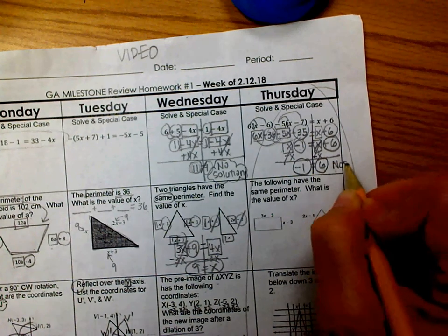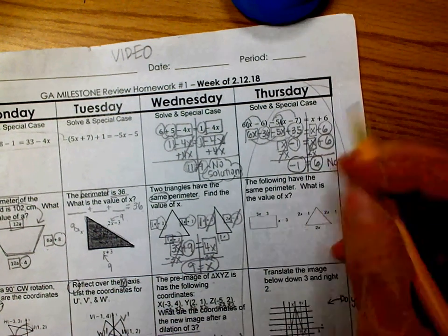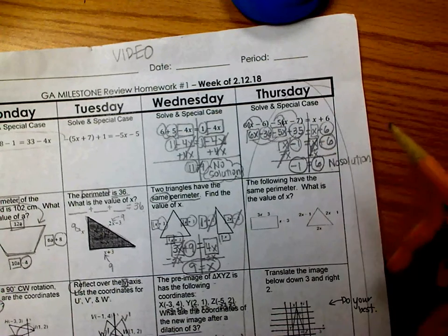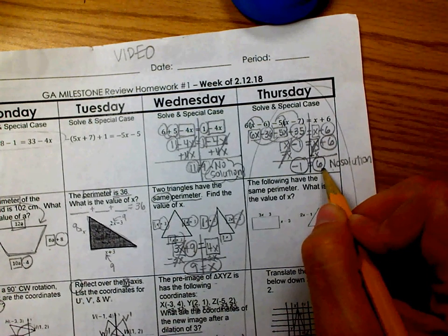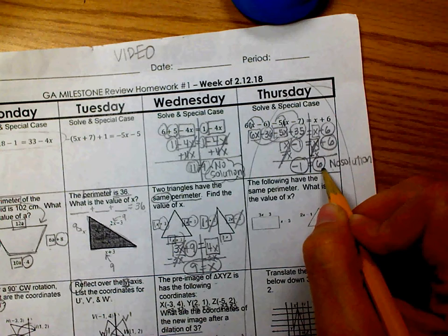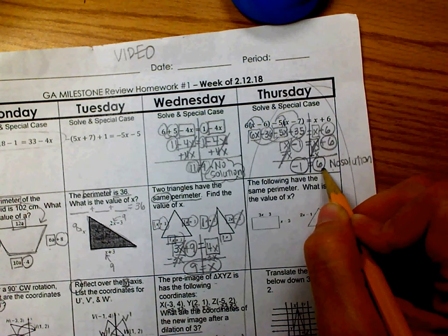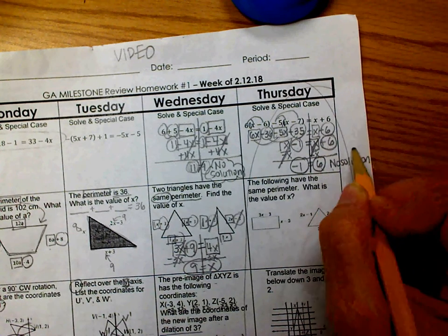When the variable drops out, it cancels out on both sides, then you're left with two numbers. And you have to decide whether they are equal or not. If they're equal, then it's infinitely many solutions. If they're not equal, it's no solution. So, this is the answer.